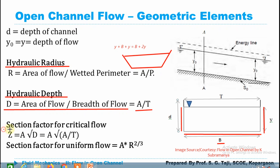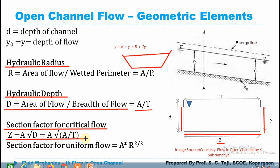The section factor Z is given by the equation Z = A × √D, where the hydraulic depth D can also be written as A/T. Substituting, Z = A × √(A/T), which can also be written by taking A inside the root as Z = √(A³/T). This is the section factor Z.